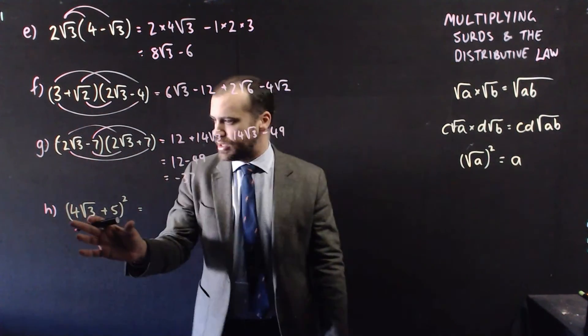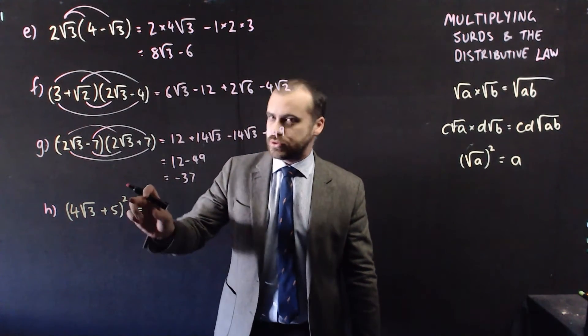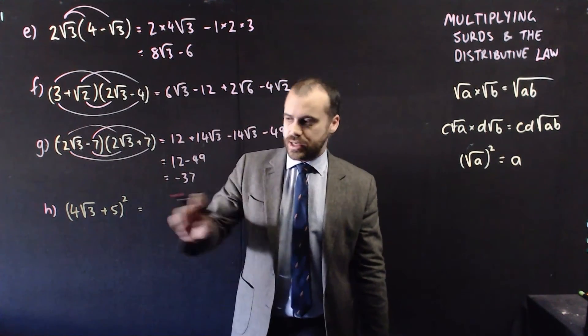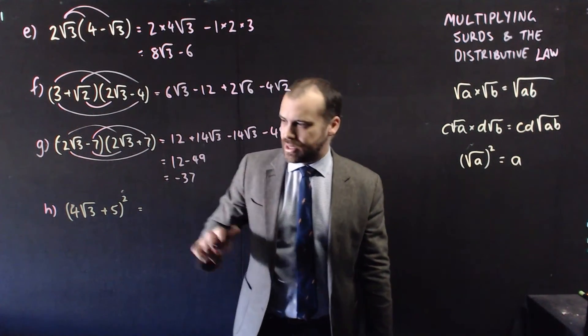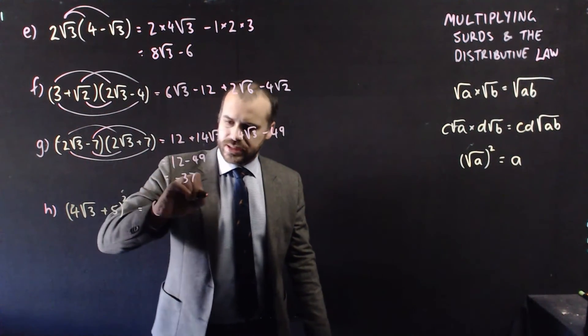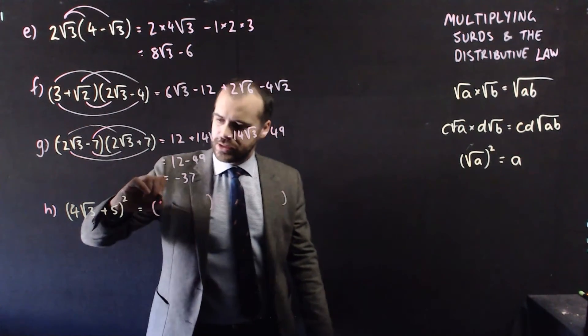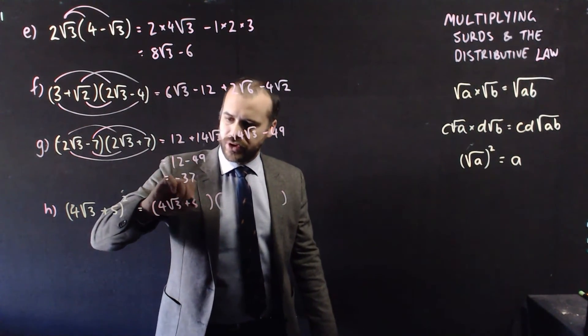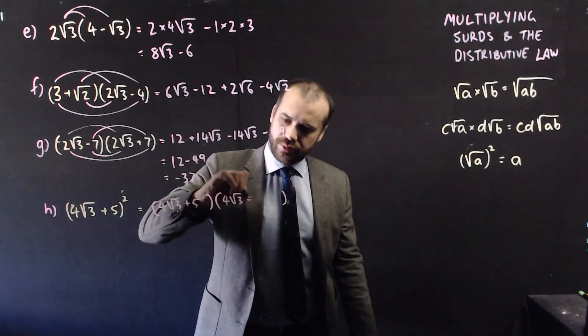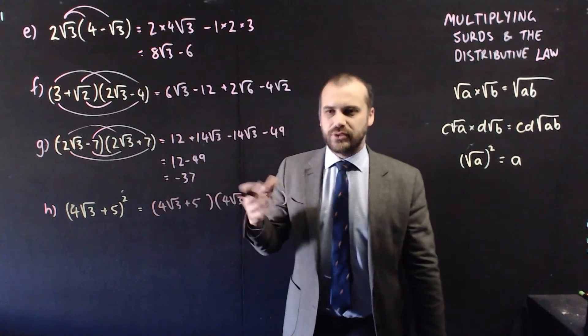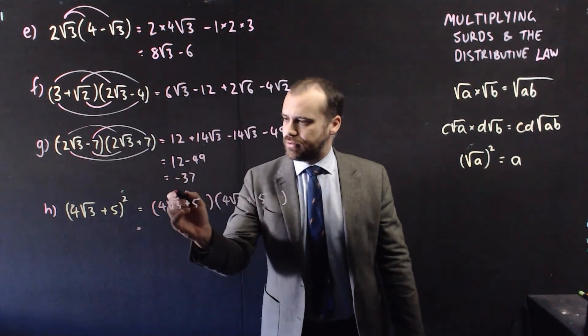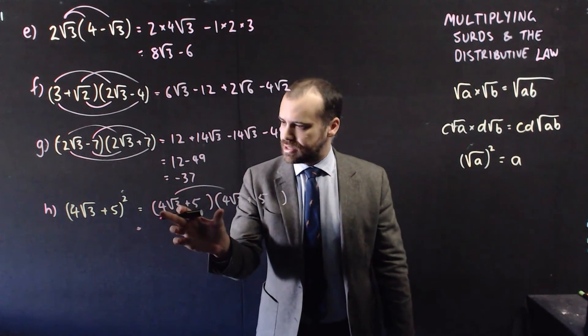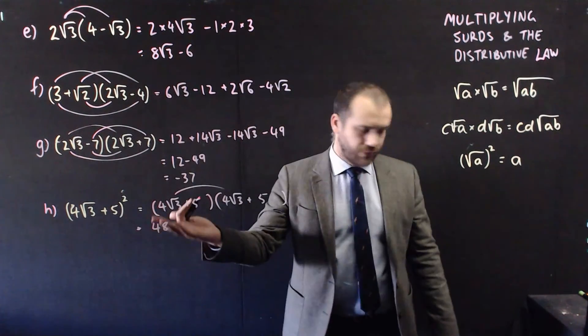Now of course I have to show you this. 4 root 3 plus 5 all squared. Don't make the mistake here of squaring this and squaring this and calling it a day. That's not what it means. Remember that this is a set of two brackets. 4 root 3 plus 5, and 4 root 3 plus 5. And then you still have to apply your FOIL method to that. So 4 root 3, let's do the first one. 16 times 3, 48.